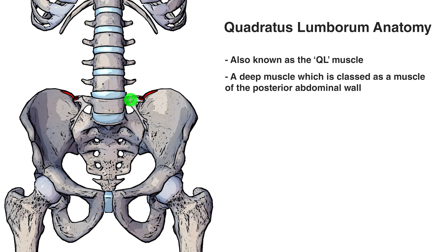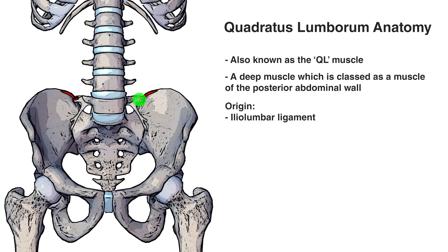The iliolumbar ligament essentially connects the 5th lumbar vertebrae onto the ilium itself. This section of the iliolumbar ligament is connecting onto the iliac crest, which is the ridge running across the top of the hip. In terms of what the quadratus lumborum connects onto, it connects onto this section of the iliolumbar ligament and onto the inner lip of the iliac crest, specifically the area marked out in red.